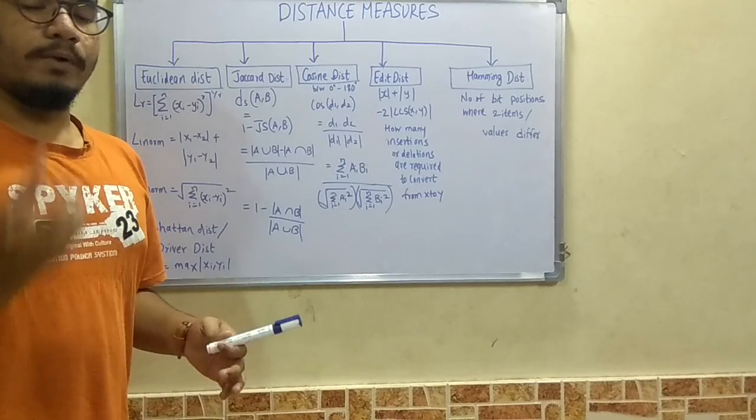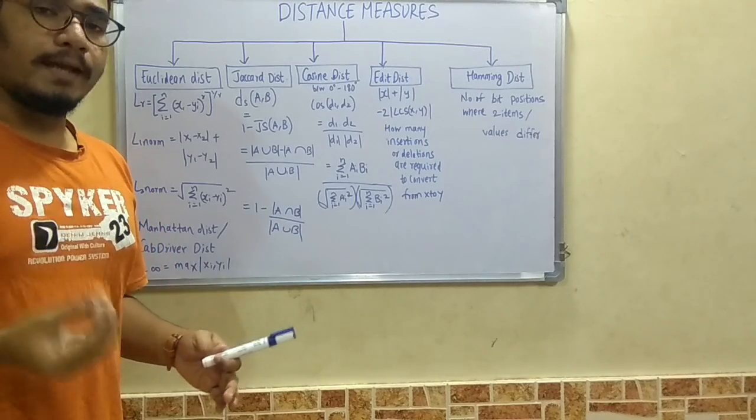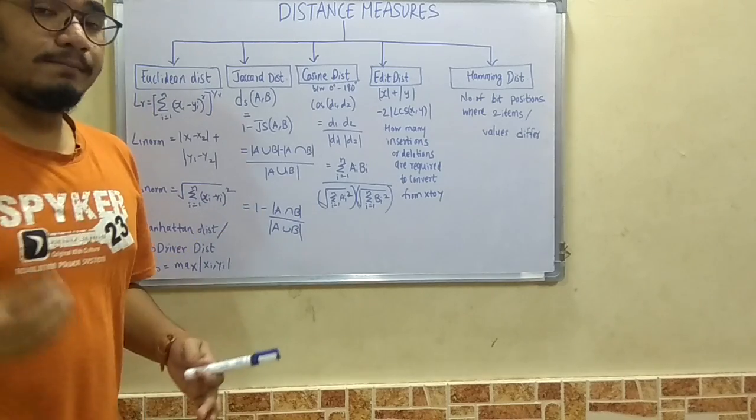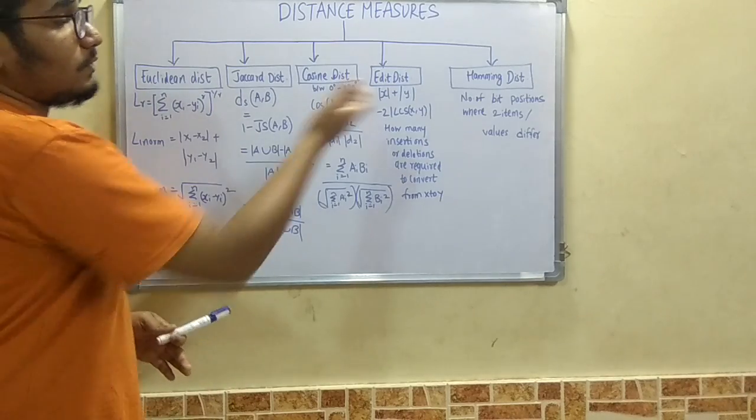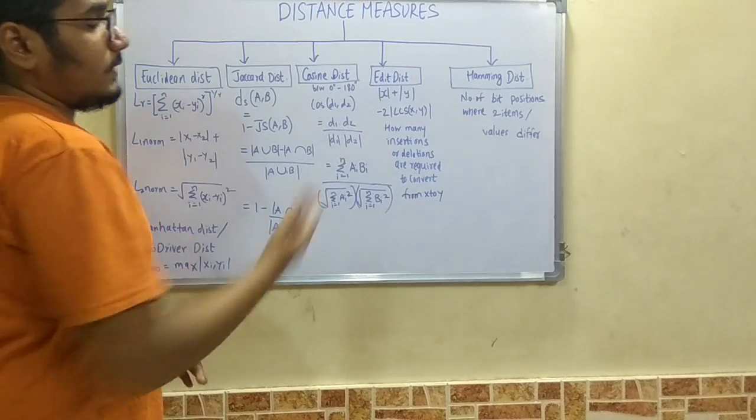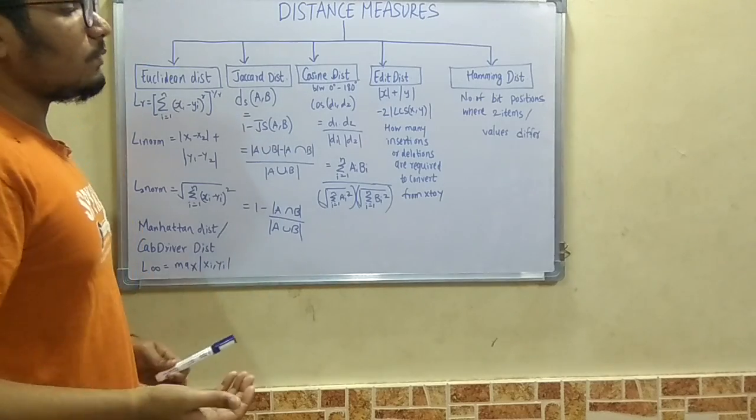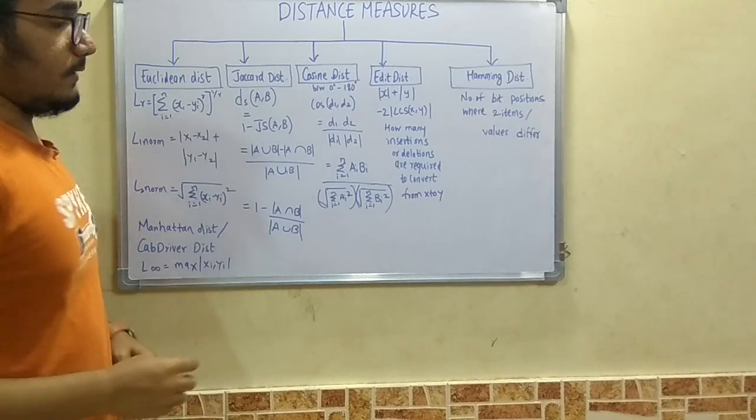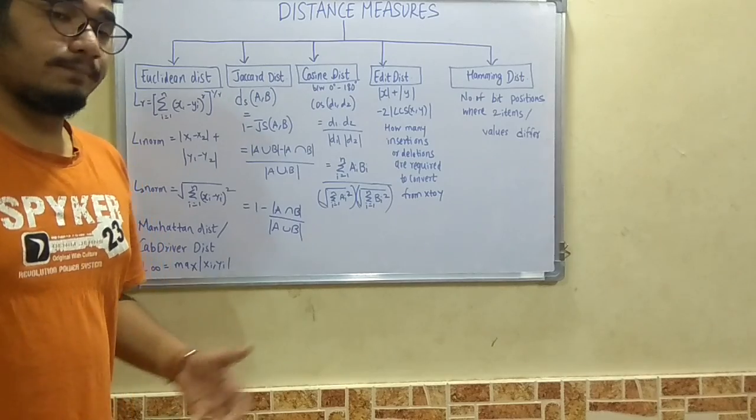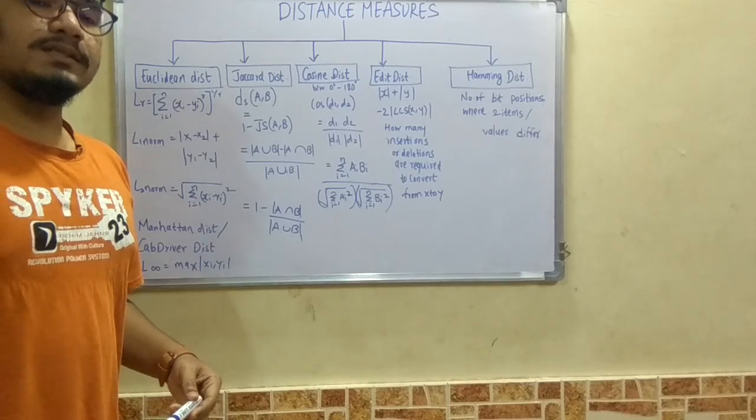Suppose we have two different words which have common characteristics between them. The frequency of those characters, or how many times these characters are repeating, is given by the LCS, the longest common subsequence. It tells us how many insertions or deletions are required to convert from X to Y, or how many moves or steps are required for converting the question to the answer.